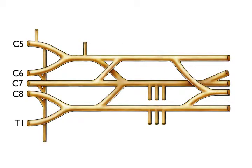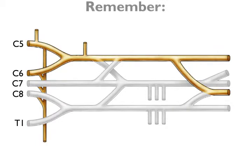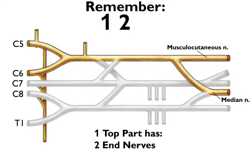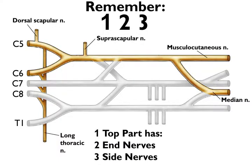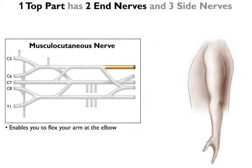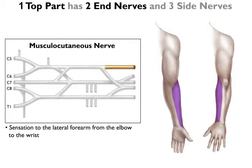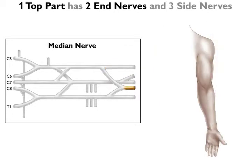Now, let's go through the movements and sensations we've tested for each part of the plexus in order — top, middle, and bottom. Taking it from the top. Remember, the 1 top part has 2 end nerves and 3 side nerves. The musculocutaneous nerve lets you flex your arm at the elbow. It also provides sensation to the lateral forearm, from the elbow to the wrist. We'll talk about the median nerve later.